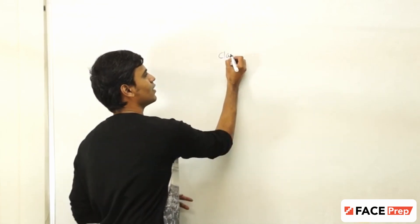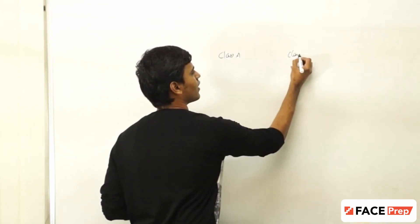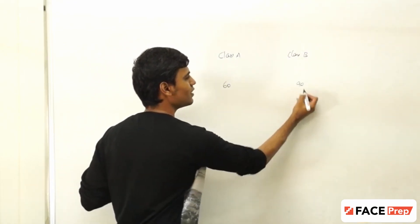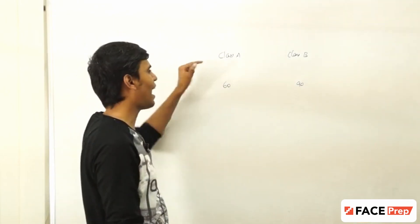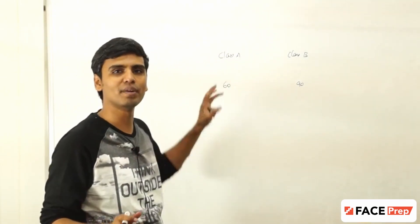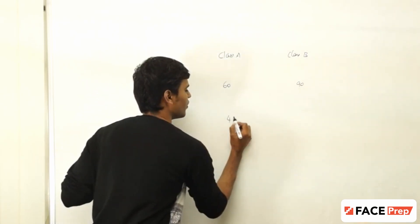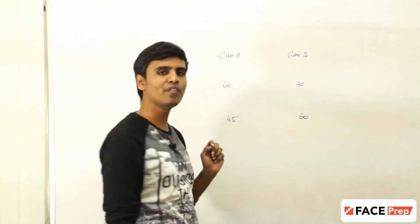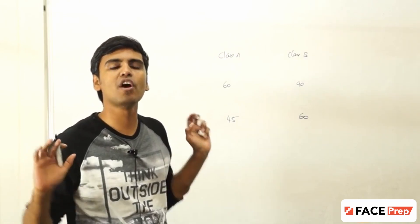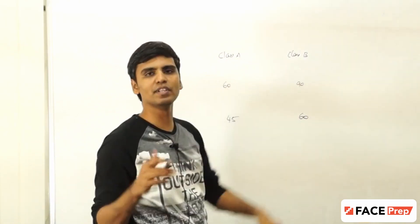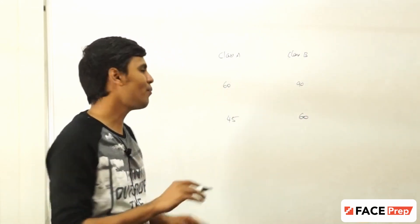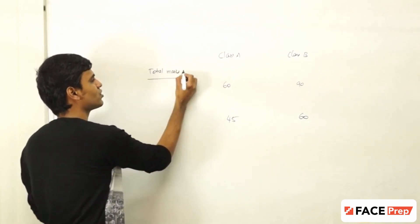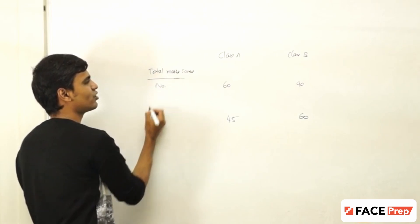Let's say there are two classes, class A and class B. Class A has 60 students and class B has 90 students. The average score in a biology exam by class A is 45, and the average score by class B in the biology exam is 60 marks out of 100. Now if you have to find the overall biology score average of both classes, the usual way of doing it is total marks scored divided by number of students.